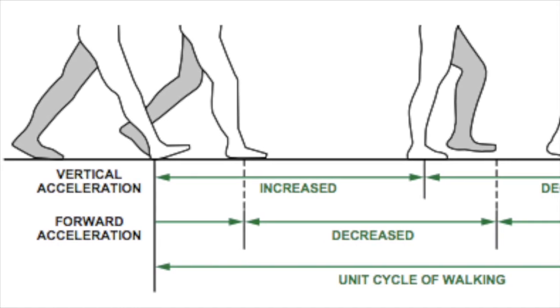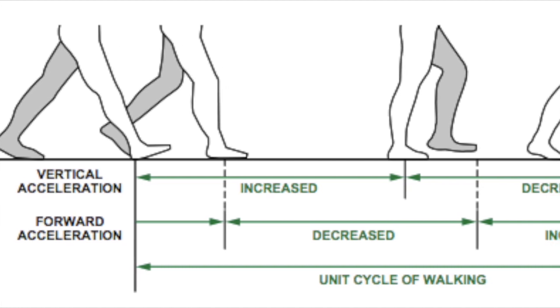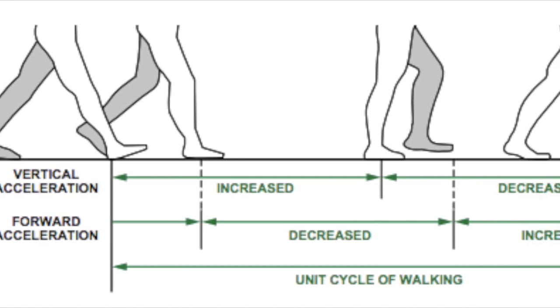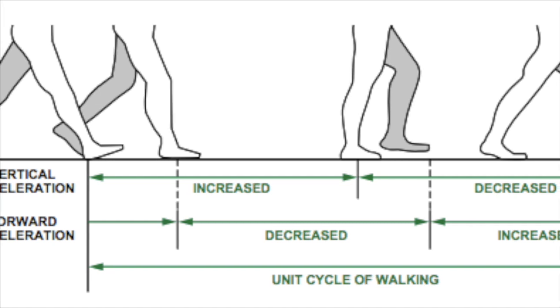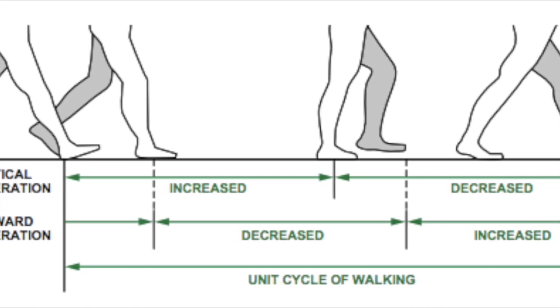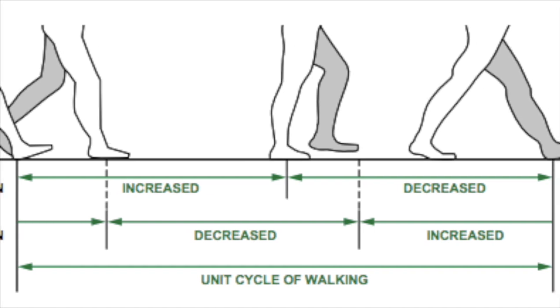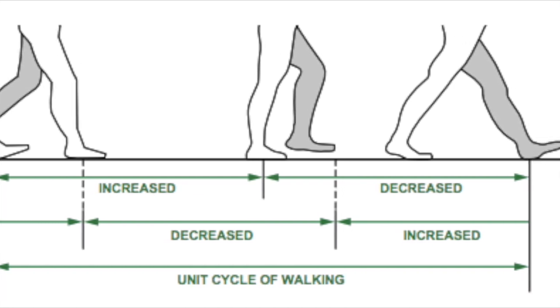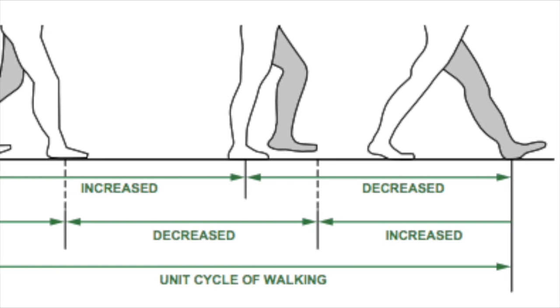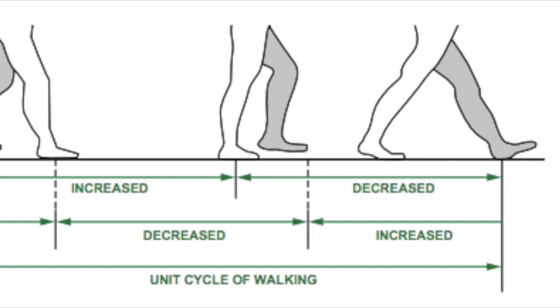In simpler terms, with every step you take, your body tilts to one side and you swing a leg forward and plant your foot. Then your body tilts the other way, swings the other leg forward, and plants that foot. As you can see in this image, the forward and vertical acceleration varies as you plant and lift your feet and your hips naturally swing.